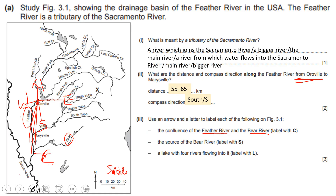The source of the Bear River is where the river starts — label that with letter S. For a lake with four rivers flowing into it, label it with letter L. The four rivers flowing into it are: the South Fork, the Middle Fork, the North Fork, and the West Branch. That's six marks.